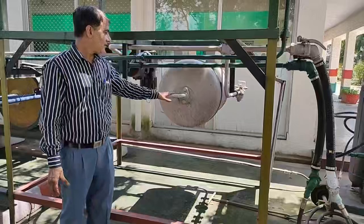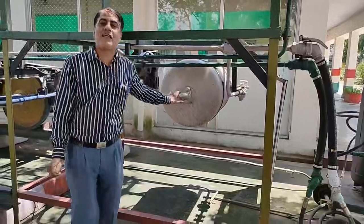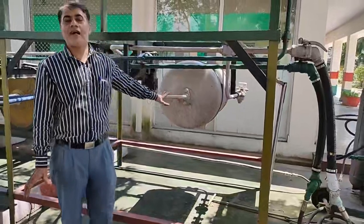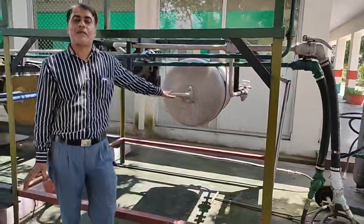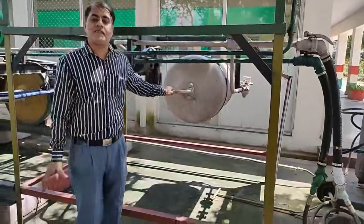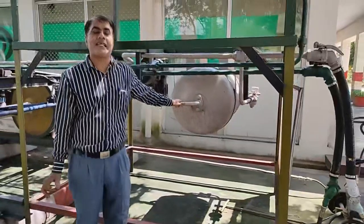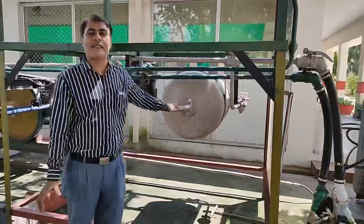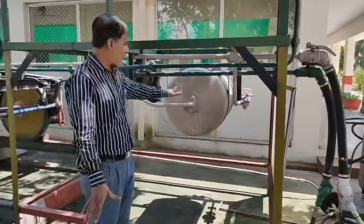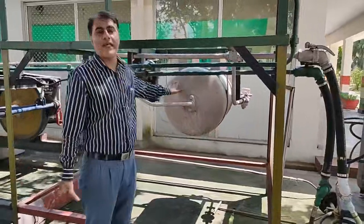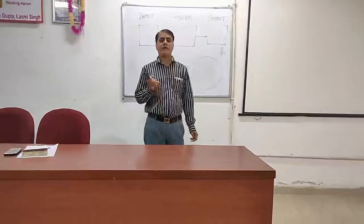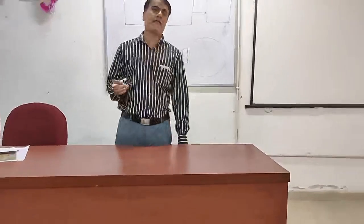This is the auxiliary reservoir, having a capacity of 200 liters, having pressure of 6 kg per cm² air pressure. When it is needed to apply the brake, the air will be supplied to the brake cylinder.